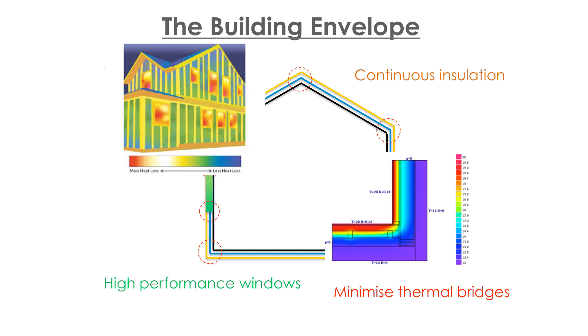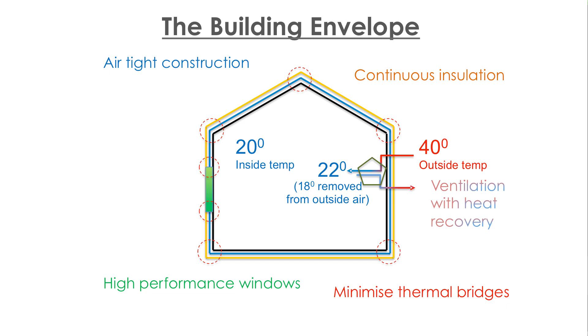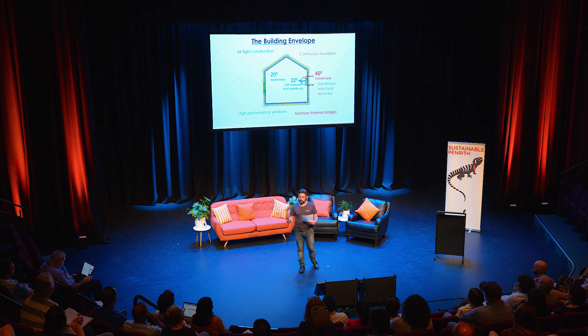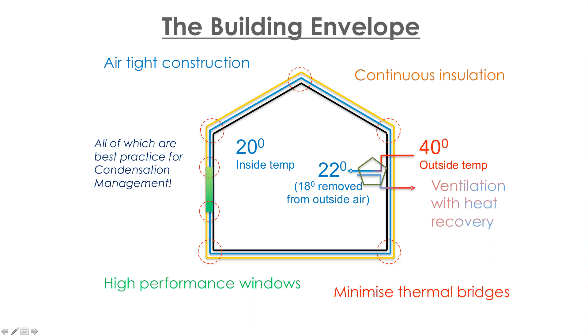Finally, we have a ventilation system that keeps the air nice and fresh and healthy. However, it's no good bringing all that fresh air in from outside if it's 45 or 50 degrees and it's just going to heat the house up. So it has what's called a heat recovery unit — it literally takes the heat out of the air. Using the example on screen: if it's 40 degrees outside and 20 degrees inside, the heat recovery works at 90% efficiency, taking 18 degrees of temperature out of that air so that the fresh air coming in is down at a nice 22 degrees. All of these aspects of the building envelope are best practice when it comes to condensation management. And what does condensation do? That mould that we saw before.